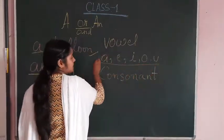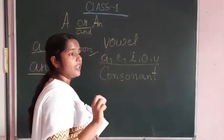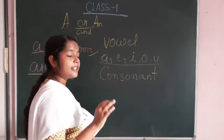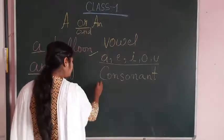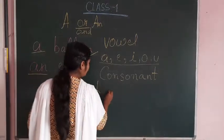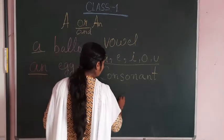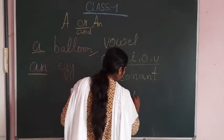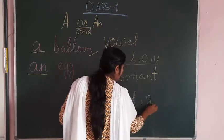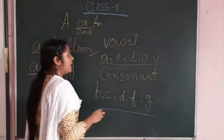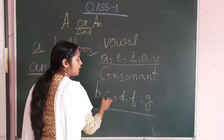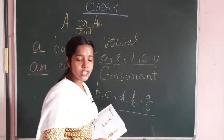Now come to the consonant. Leaving these letters A, E, I, O, U, every remaining letter are consonant like B, C, D, F, G. Remaining till Z, leaving these letters, whatever letters will be there, it is consonant.